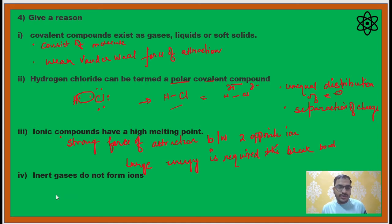The last reason which came in your boards was: inert gases do not form ions. Why do inert gases not form ions? Inert gases are nothing but the noble gases, and noble gases have a completely stable electronic configuration. Why stable electronic configuration? Because the outermost shell are completely filled.